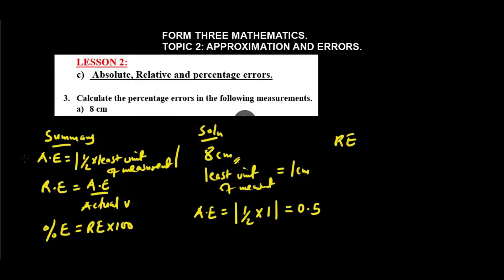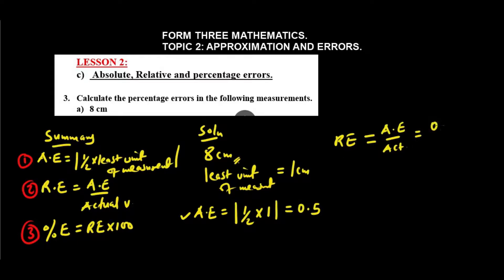In the procedure, we first determine the absolute error, then the relative error, and finally the percentage error. The relative error is absolute error over the actual value, which is 0.5 over 8. When worked out, that gives us 1 over 16.